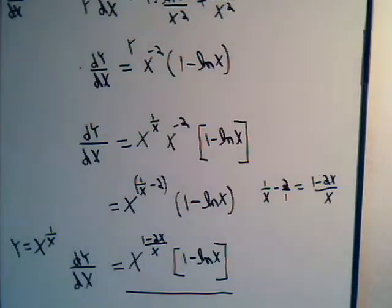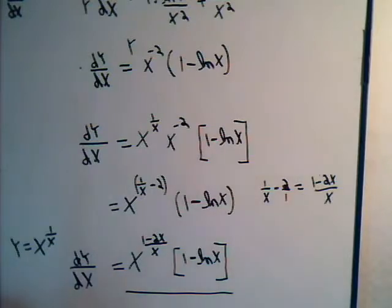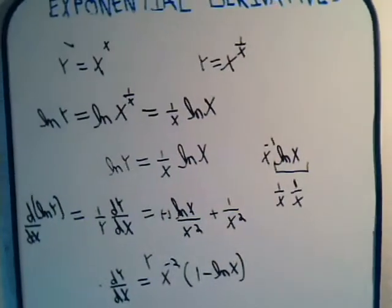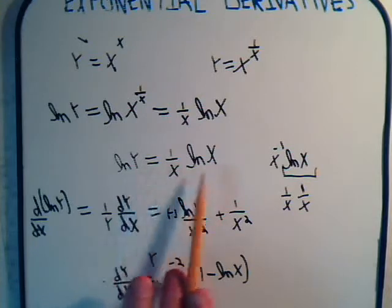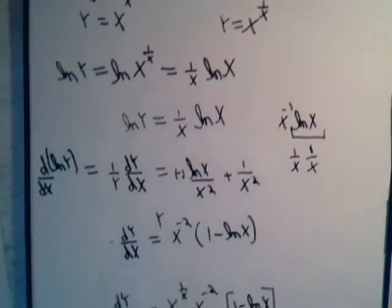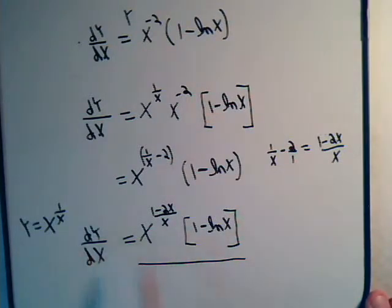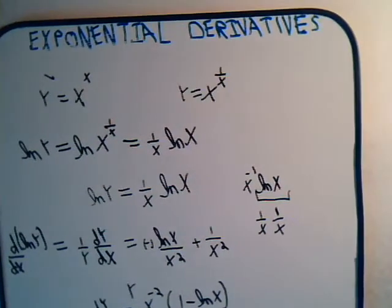If you were looking at this and wanted to find dy/dx, there's no way the answer would be obvious. We have to take the natural log of both sides and set it up using logarithmic differentiation. Once you do that, it's pretty much just following the steps. Hope that was helpful — come back and join us for some more videos, and we'll try to solve some more problems.